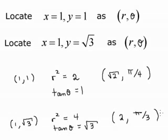Let's take a look at some actual points. Suppose we're looking at the point x equals 1, y equals 1, and we wish to find it as r theta. Well, r squared is x squared plus y squared, so that's 2. And tangent theta is y over x, which equals 1. That means that r is the square root of 2, and theta is pi over 4.